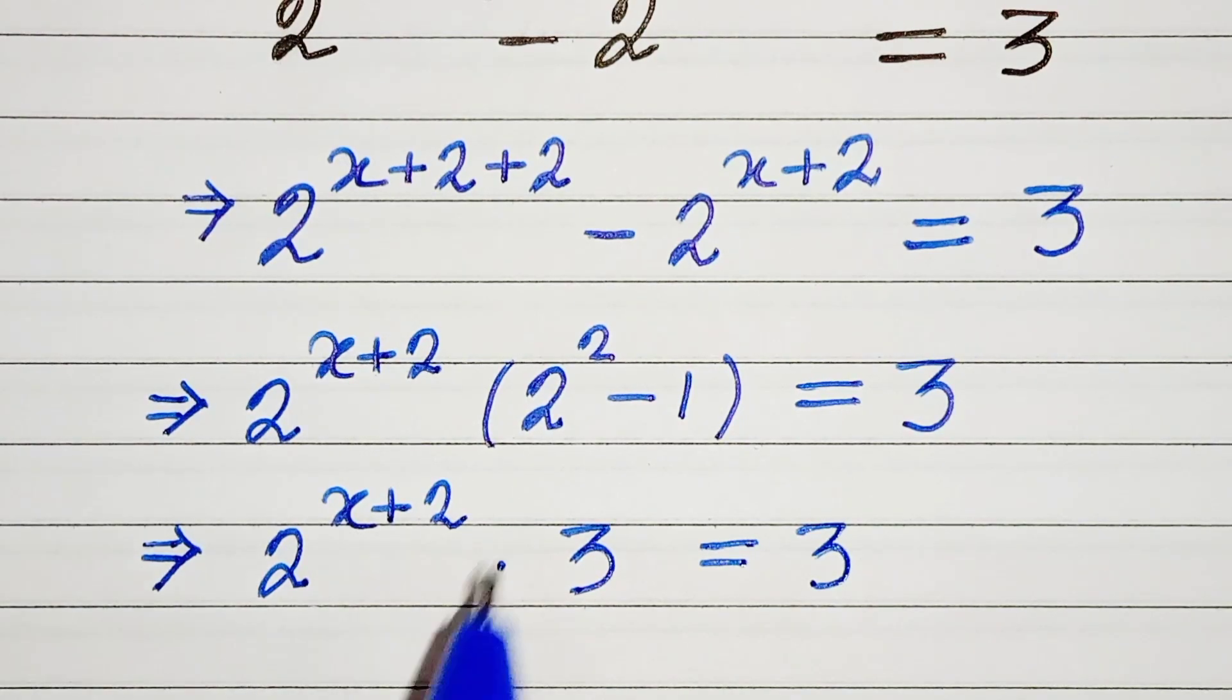Now 3 and 3 gets cancelled. So 2 raised to the power x plus 2 equals to 1.